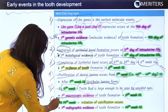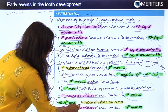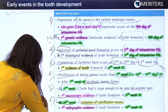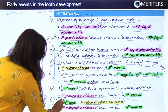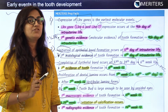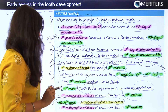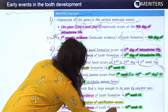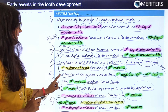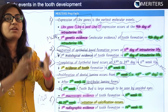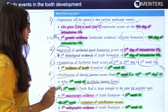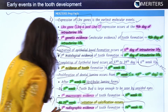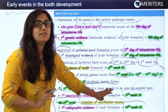At the 14th week, the initiation of calcification occurs — this is an important MCQ point. The first radiographic evidence of tooth formation also occurs at the 14th week of intrauterine life, since radiographic evidence requires a calcified structure to be present.